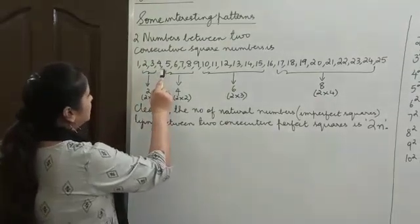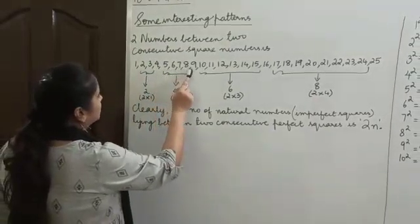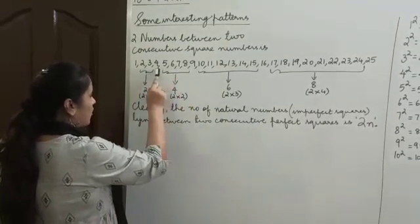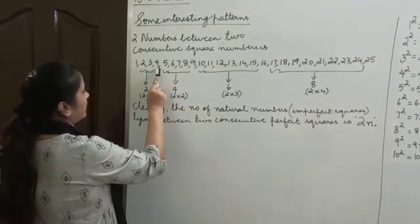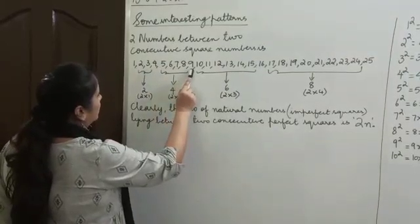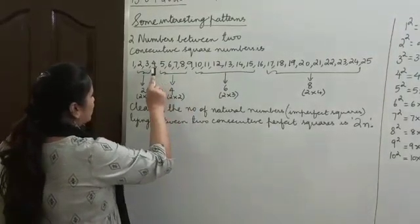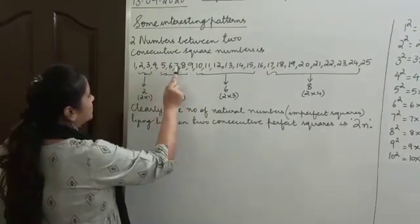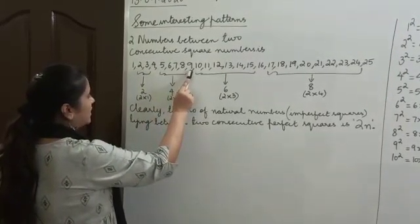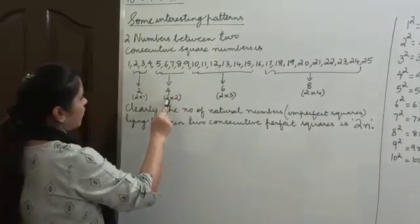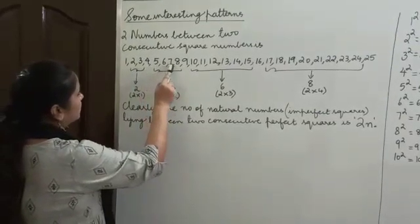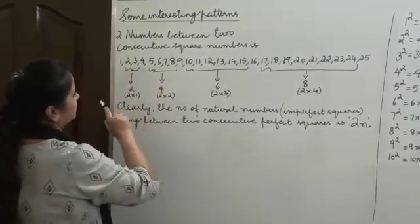Now, check the number of imperfect squares between 4 and 9. 4 is a perfect square and 9 is also a perfect square. Between these two consecutive perfect squares 4 and 9, we have 4 imperfect squares: 5, 6, 7, and 8.